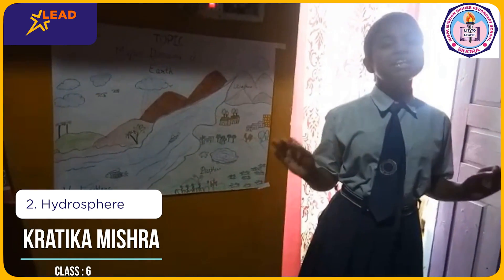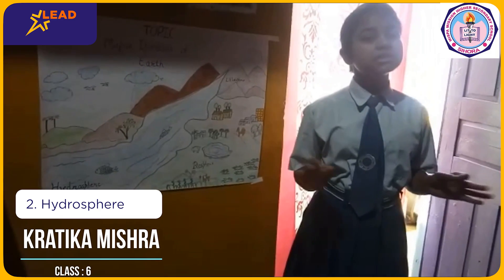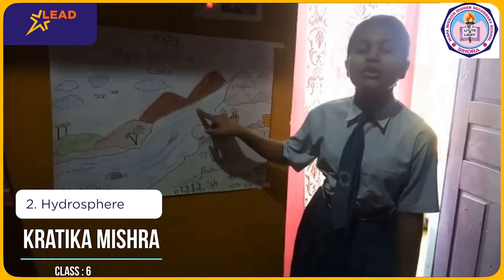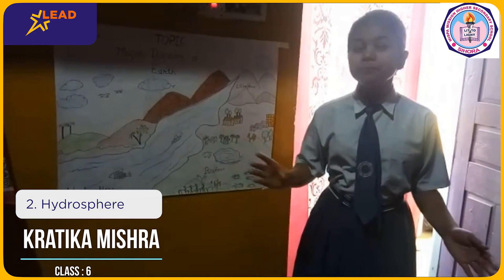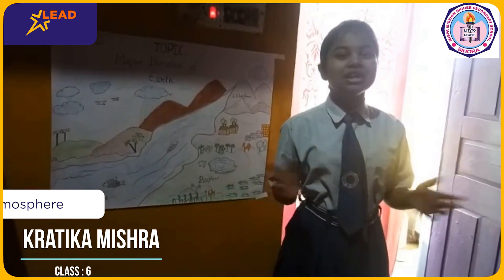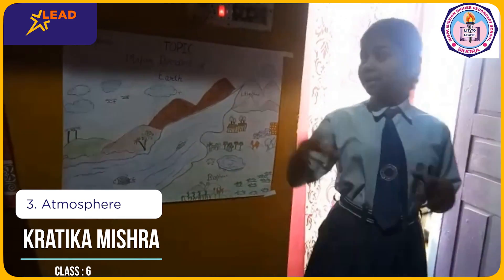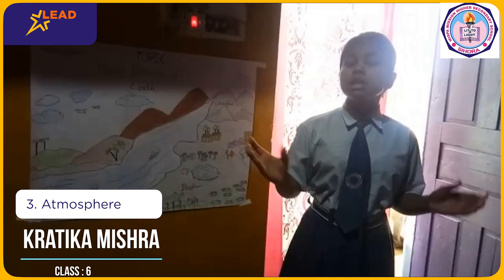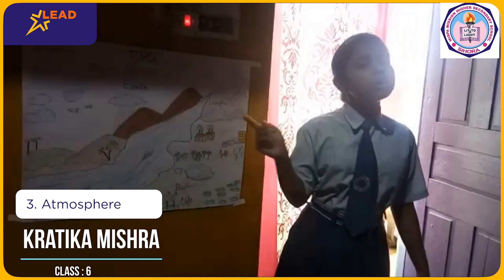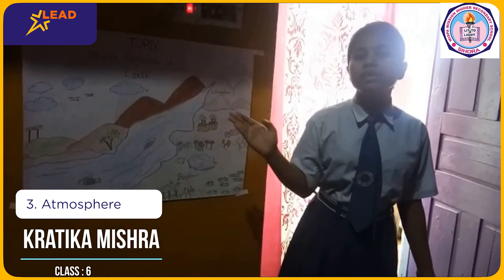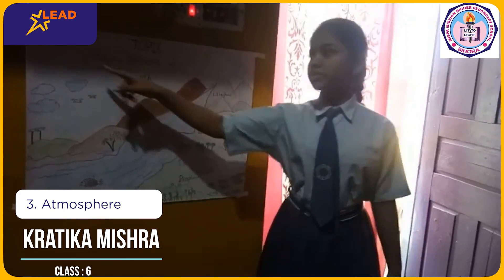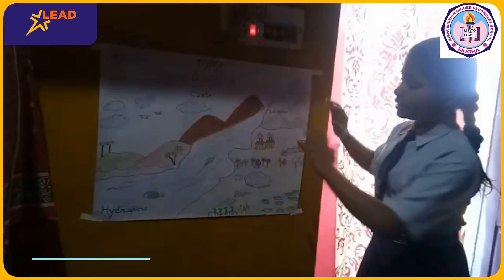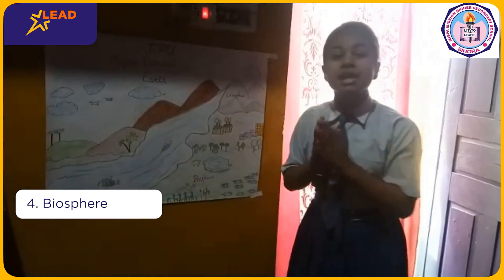Water covers a big area of the earth's surface, and that is called the hydrosphere. As you can see, this water is called the hydrosphere. Next is the atmosphere — the air covering the earth's surface. It is also called the thin blanket of the earth's surface, and it is called the atmosphere.